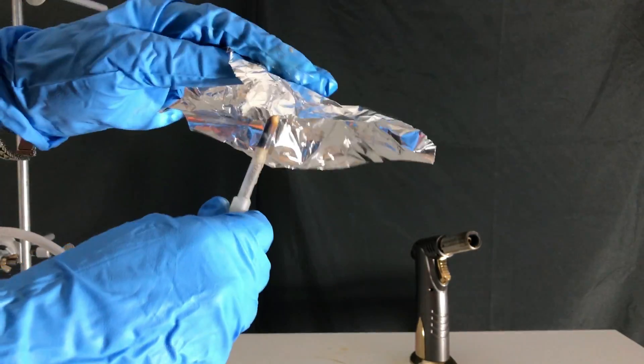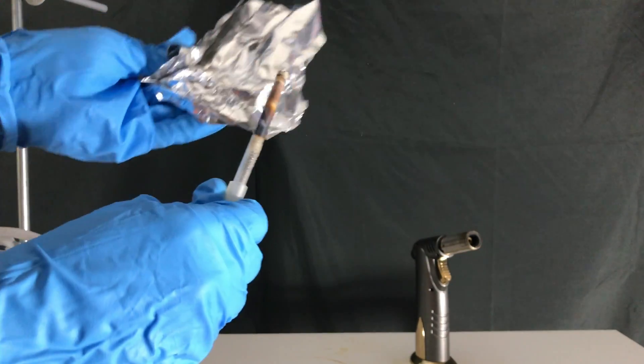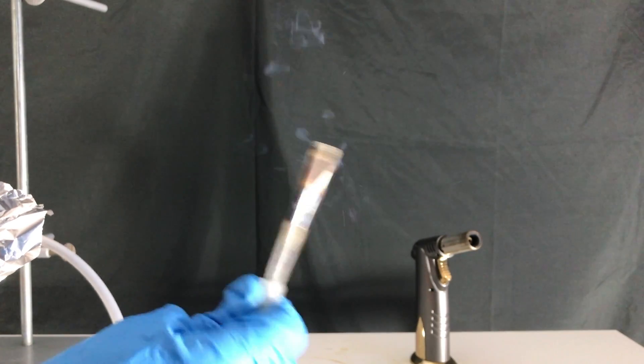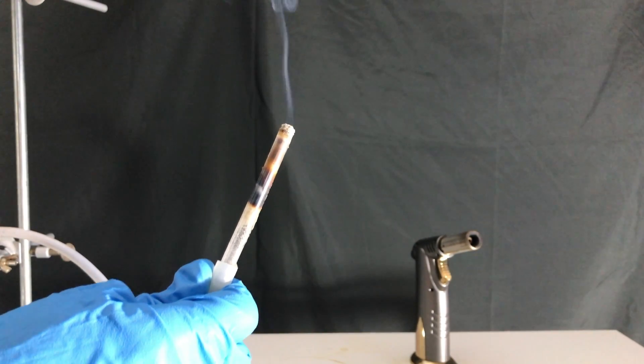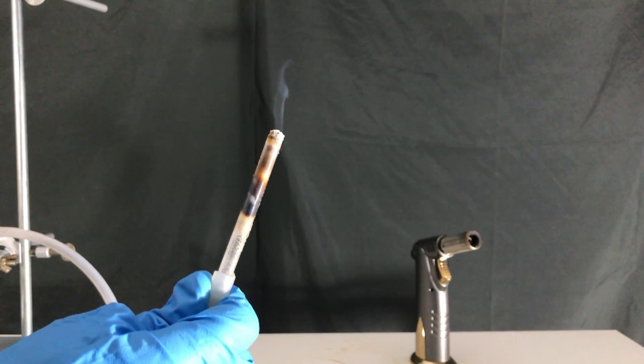To show you the pyrophoric properties of silane, I tried to extinguish the flame using aluminum foil. You can see that silane doesn't always ignite, but when you turn up the flow of silane, it will ignite by itself, as you can see here.